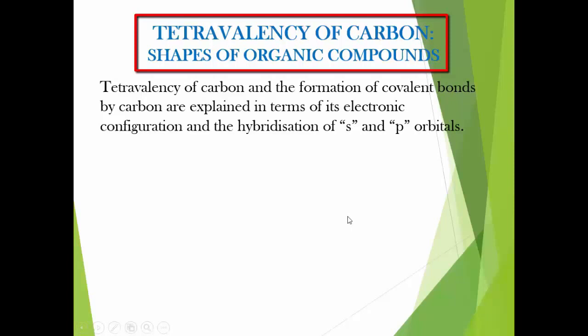What is catenation? It is the ability of carbon atoms to form self-linking carbon chains. The second is tetravalency - tetravalency means it can form four bonds. How we can explain the tetravalency of carbon, we are going to see today. First of all, let's see the electronic configuration of carbon.